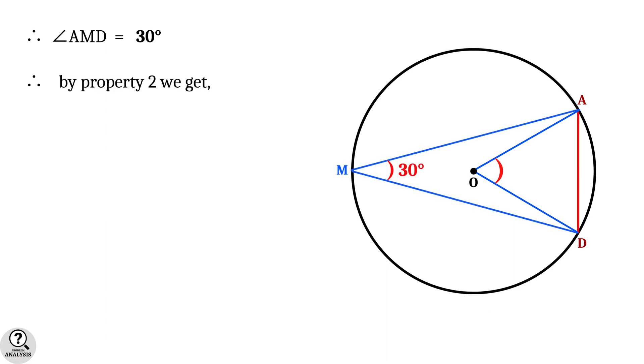Then, by property 2, we get angle AOD is equal to 2 times angle AMD, that is equal to 60 degrees.